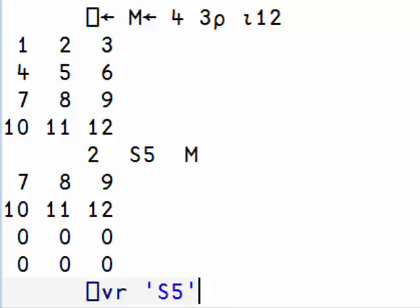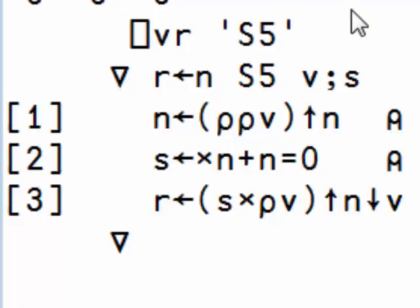we need to modify S4 like this. On the first line, we make sure that we have shift numbers for each dimension. On line two, we compute the sign and adjust the zeros properly, as in S4. And on line three, we perform the actual drop and take.